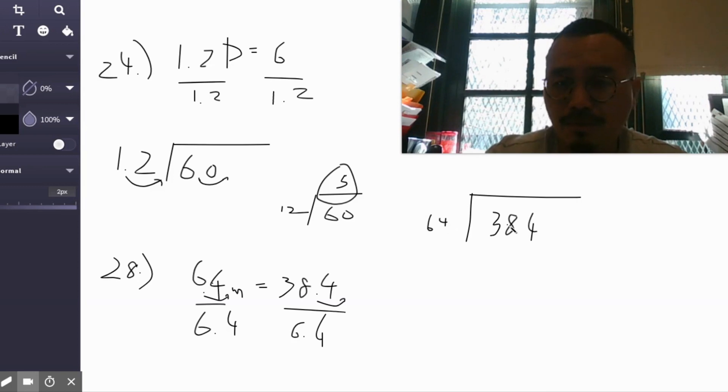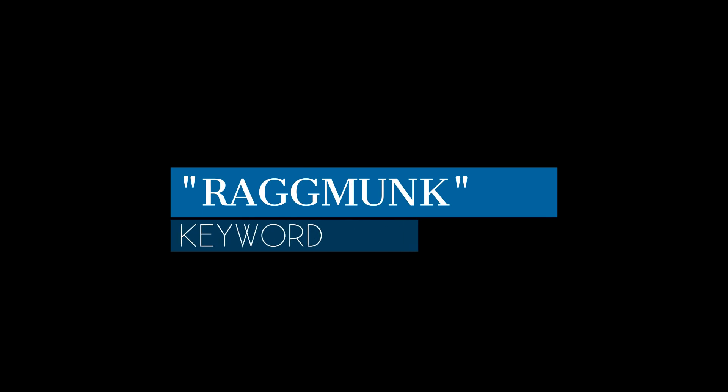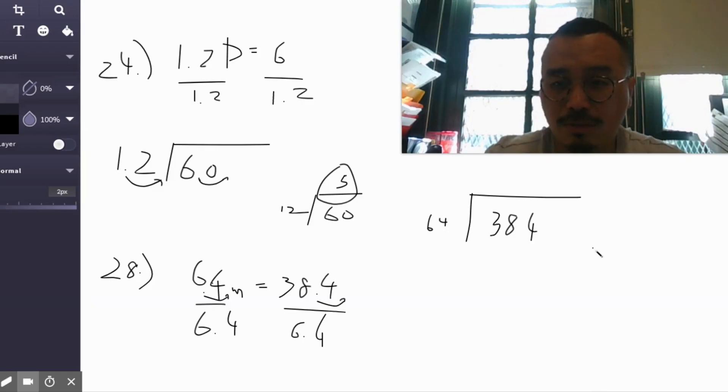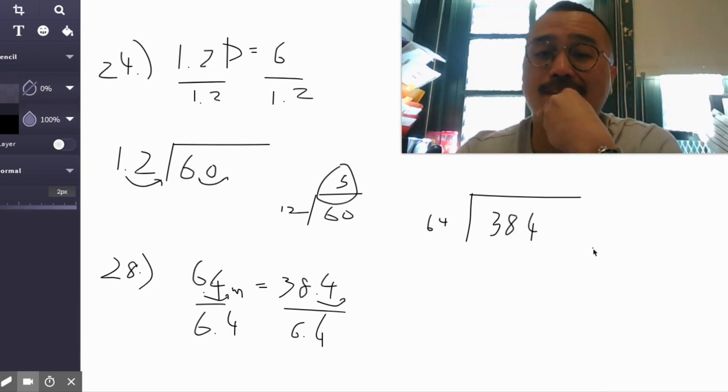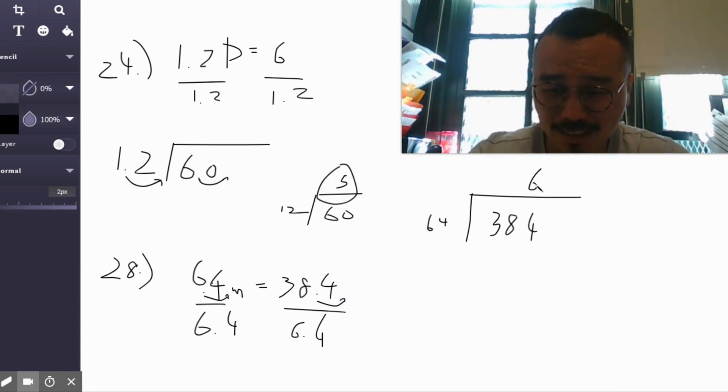Now 64 doesn't go into 3, doesn't go into 8, but 64 can go into 384. Let's think about 60 going into like 400, how many times? My guess is 5, even though it's 6—I'm looking at 6 times 4 is 24, so I kind of have a feeling. 6 times 36 equals 38, so it's 6.